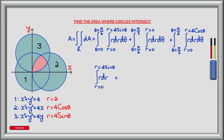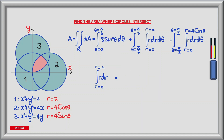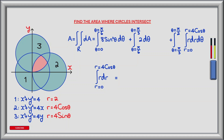We can now evaluate the inner integrals. The first is the integral from r equals 0 to r equals 4 sin theta of r dr. Using the power rule, the anti-derivative is r squared divided by 2, evaluated between 0 and 4 sin theta, giving 8 sin squared theta. The second inner integral goes from r equals 0 to r equals 2 of r dr, giving a value of 2. The third goes from r equals 0 to r equals 4 cos theta of r dr, with anti-derivative r squared divided by 2 evaluated between 0 and 4 cos theta, giving 8 cos squared theta.